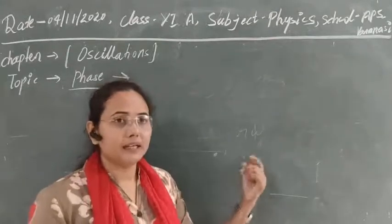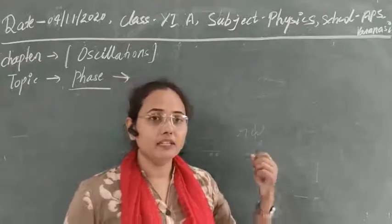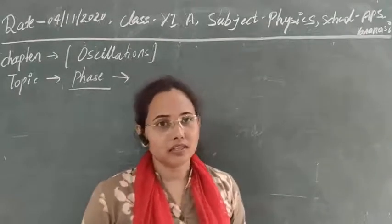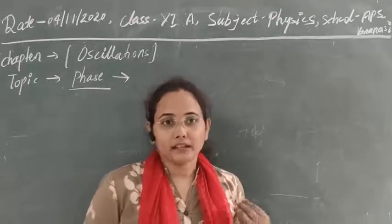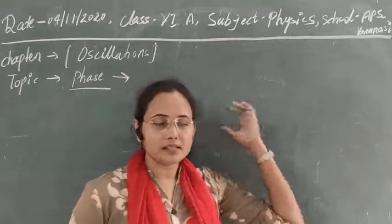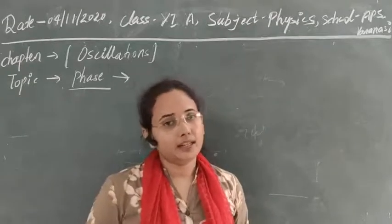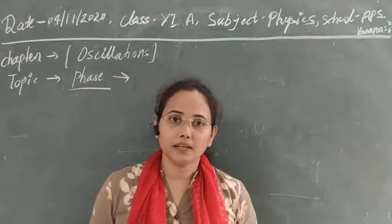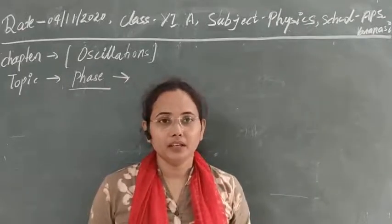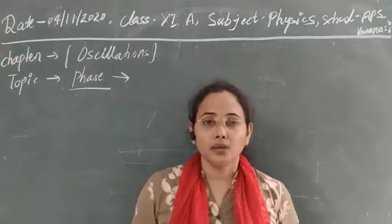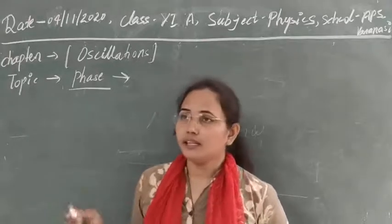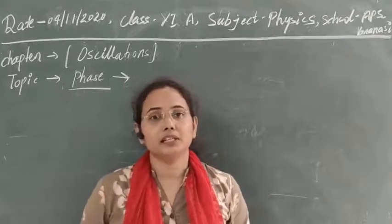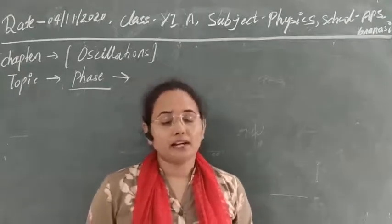Normally we tell the direction of a particle using the angle theta — with the help of the angle we can see in which direction it is making that angle, and with that angle we can say in which quadrant or in which plane the particle is moving and at which angle. Phase tells us the same things as we calculate the direction of a particle in rotatory motion. Phase is measured as a fraction of the time period, or as a fraction of 2π, which is the period of oscillation.